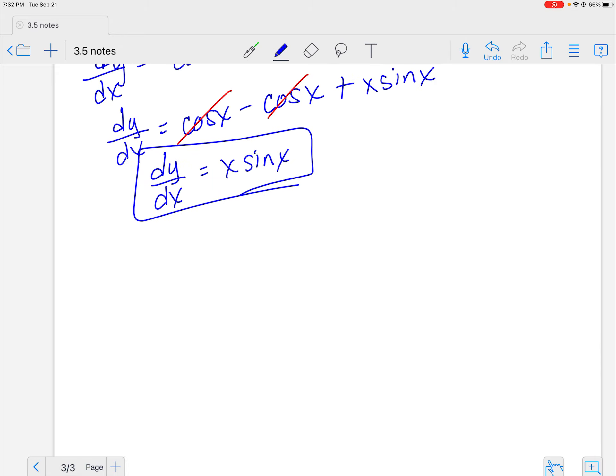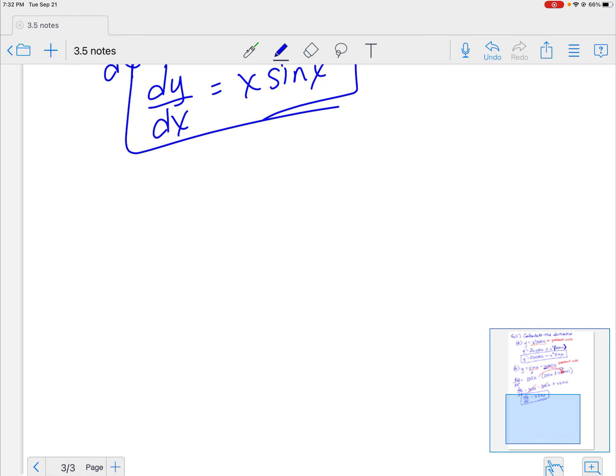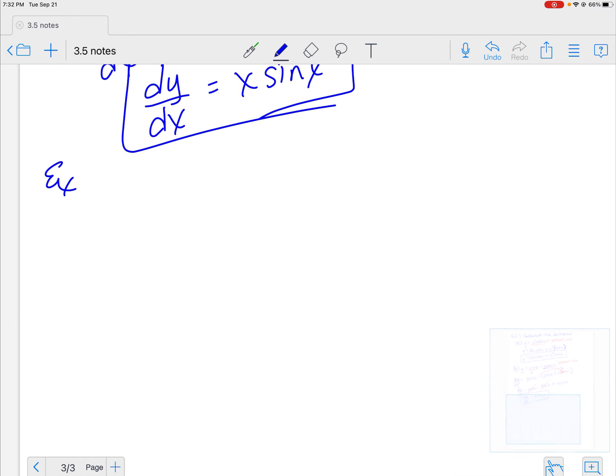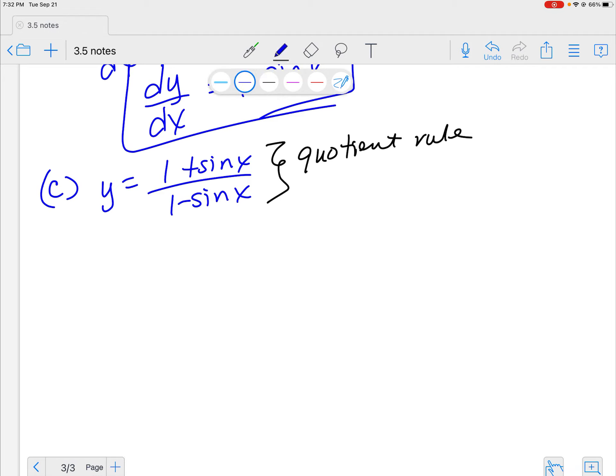Nice. Let's do one more. Do we have room on this? Oh yeah, we've got plenty of room. Let's do this thing. So here's 2c. I don't need to put that example on there again. We're still on the same page. I have y is equal to 1 plus sine of x over 1 minus the sine of x. What do we get to do? Yeah, quotient rule. So let's do it right now.